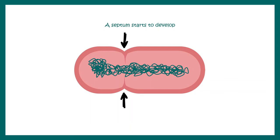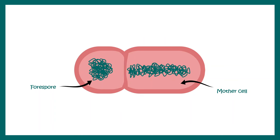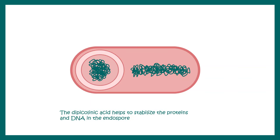Eventually the septum becomes more prominent, and the two halves of the bacterial cell become distinct. The left half in this case is the forespore — the would-be spore — and the right-hand side is the spore mother cell. Eventually the septum develops fully between these two cell types, and the mother cell engulfs the forespore.